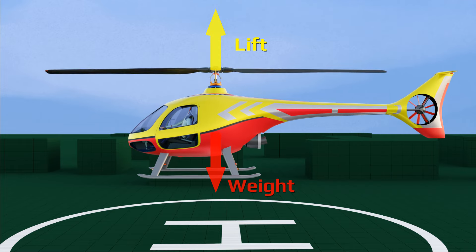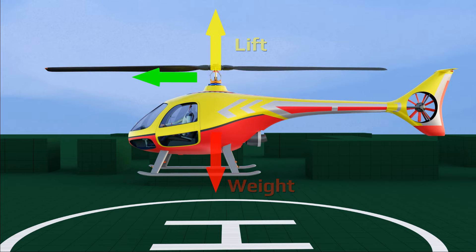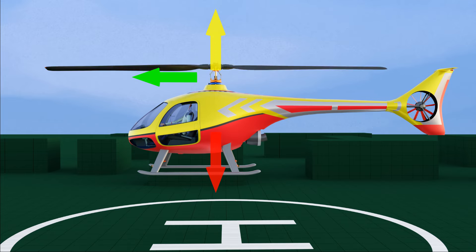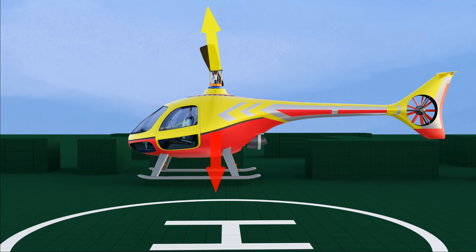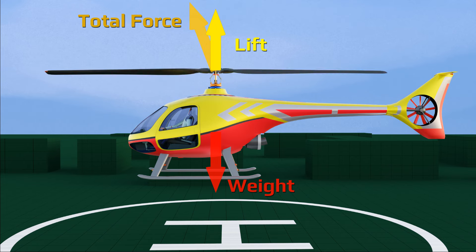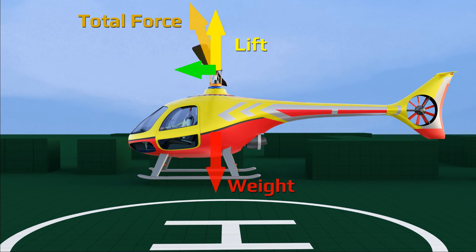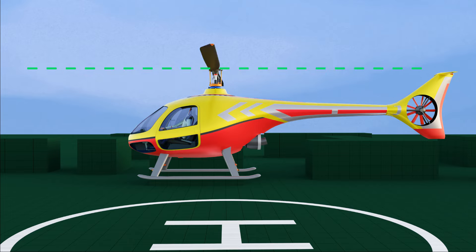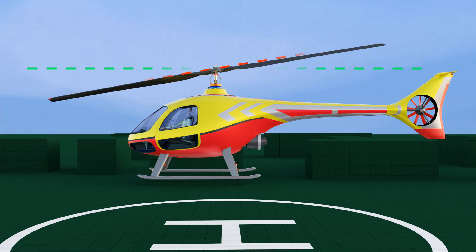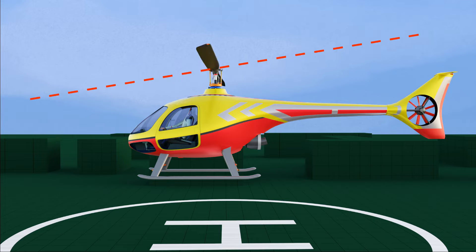But to make a helicopter fly forward, it requires force in the forward direction. This can be achieved if the total lift force acts slightly tilted forward. Then its vertical lift component will help it to hover in the air against gravity, and the horizontal force component will make the helicopter fly forward. So instead of spinning on a horizontal plane, rotor wings need to spin slightly tilted forward. This is achieved with a complex mechanical system.